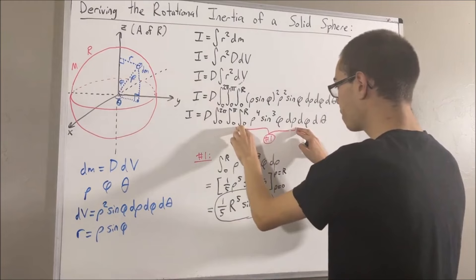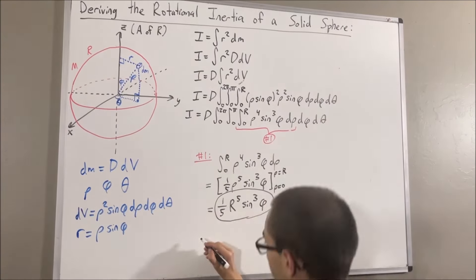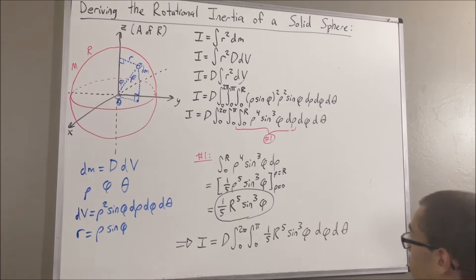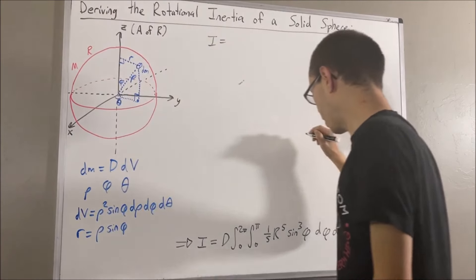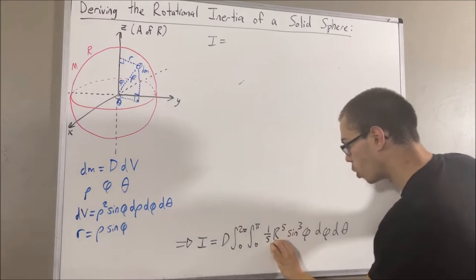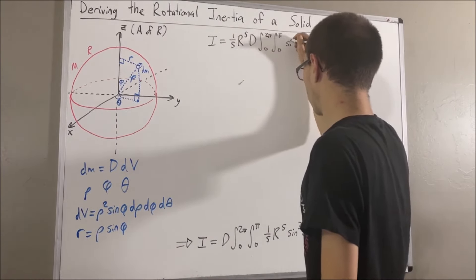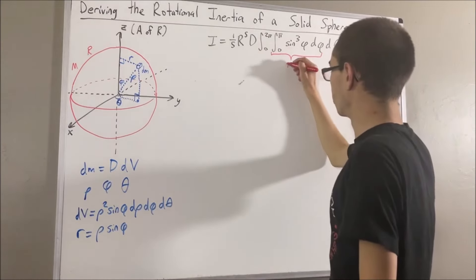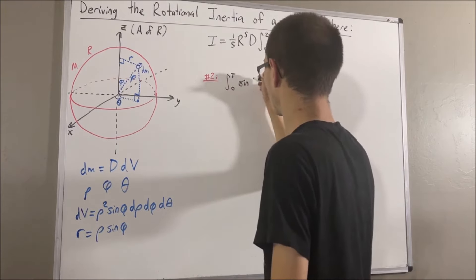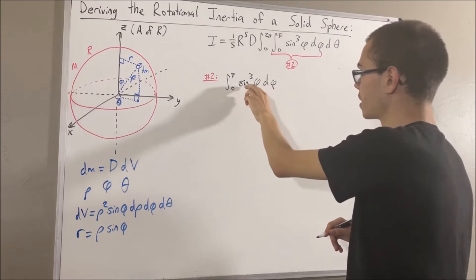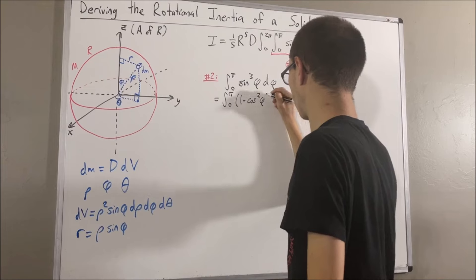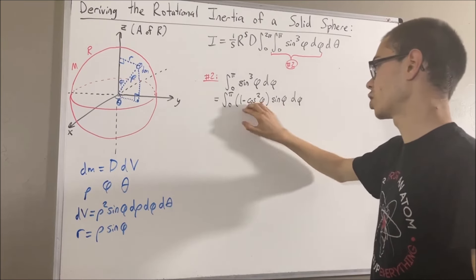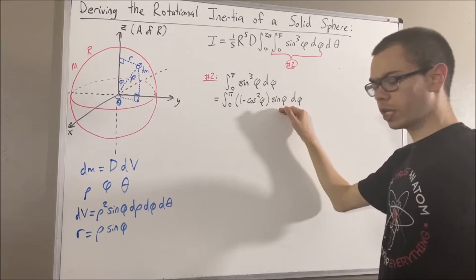Let's replace what we have with one-fifth R to the fifth sine cubed phi. Since one-fifth R to the fifth is a constant, let's pull it to the outside. Now we want to evaluate integral number 2. We can re-express sine cubed phi as 1 minus cosine squared phi times sine phi, because 1 minus cosine squared is just sine squared, so sine squared times sine equals sine cubed. At this point we can use u-substitution, letting u equal cosine phi, so du equals negative sine phi d phi.